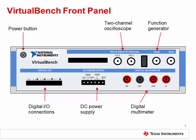The front panel of the Virtual Bench is used to make connections to your system under test. You must turn on the Virtual Bench by pressing the power button on the top left before using the device. Then you can connect to the oscilloscope, function generator, digital I/O, DC power supply, and digital multimeter as required in your experiments.